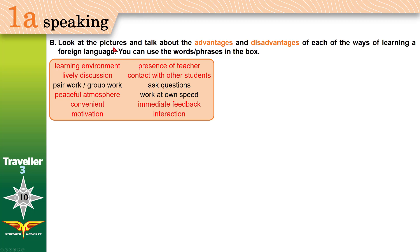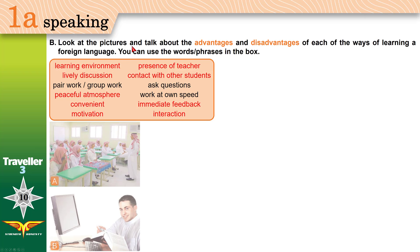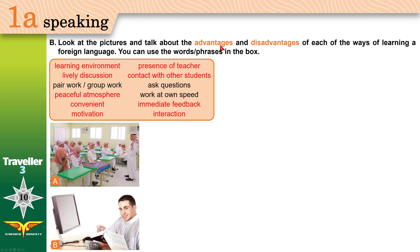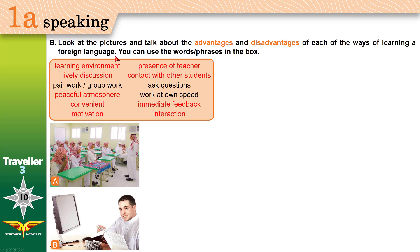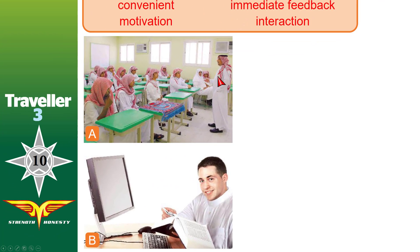Look at these two pictures and talk about the advantages — the positives, the good side — or the disadvantages — the negatives, the bad side — of each of the ways of learning a foreign language. You can use the words and phrases in the box. We will talk about the advantages and disadvantages.